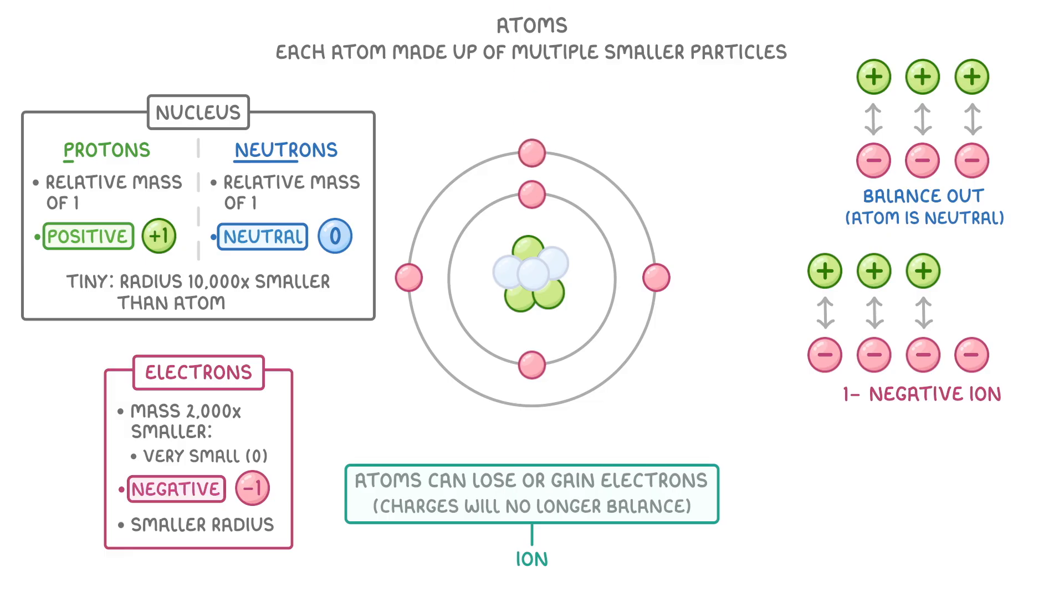While if our ion had another extra electron, it would then have two extra electrons overall and be a two minus negative ion.